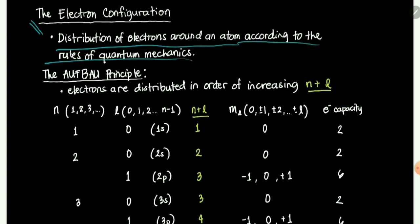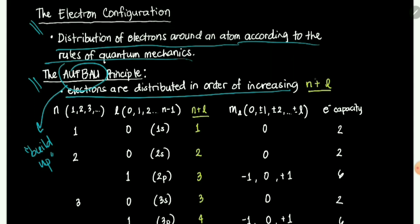Those rules are already summarized into two simpler ones. The first one is the Aufbau principle. Aufbau means 'build up.' The Aufbau principle states that electrons are distributed in order of increasing n plus l.